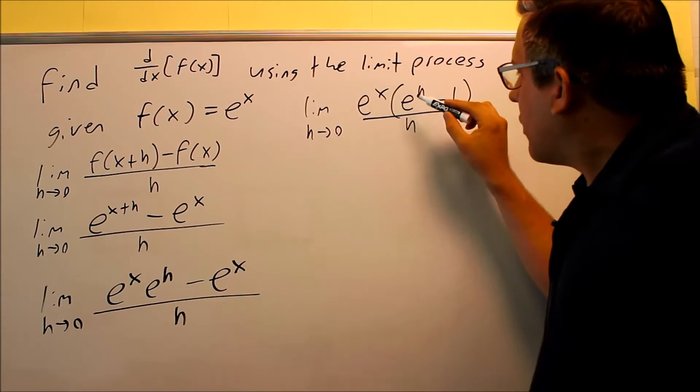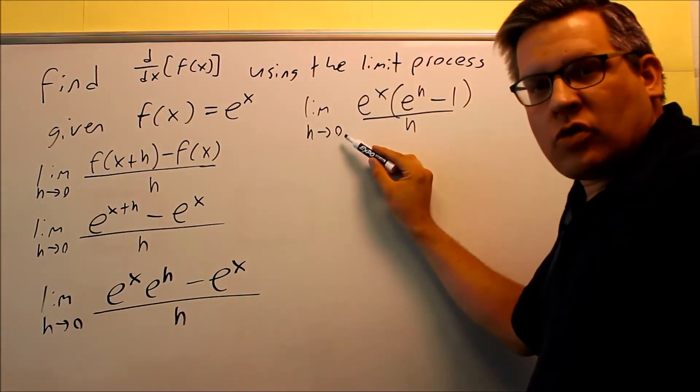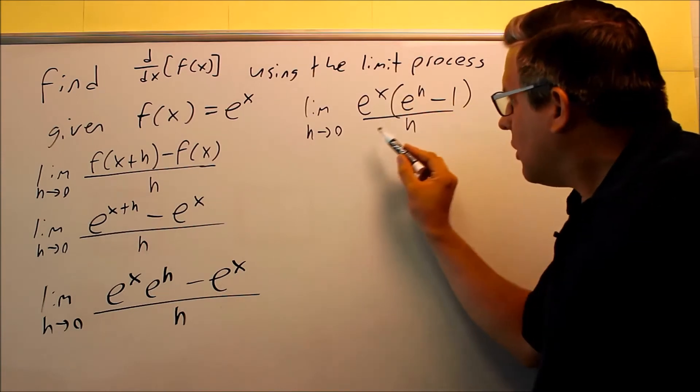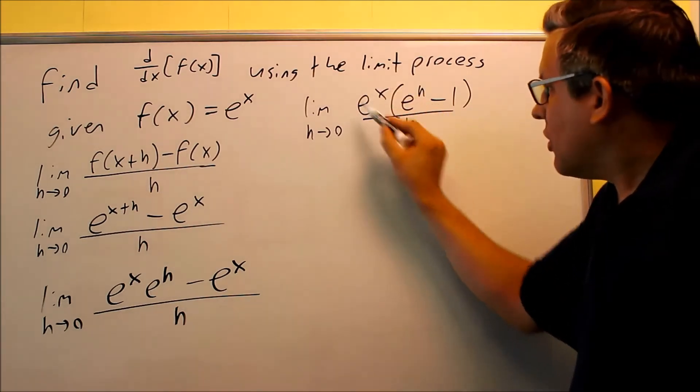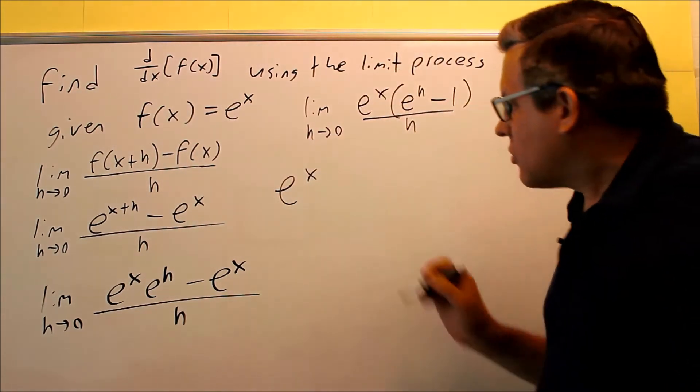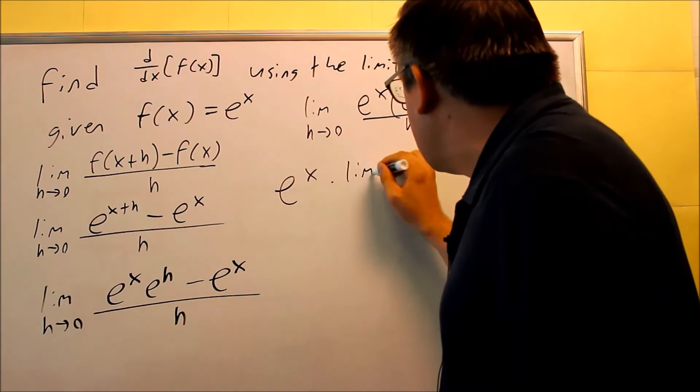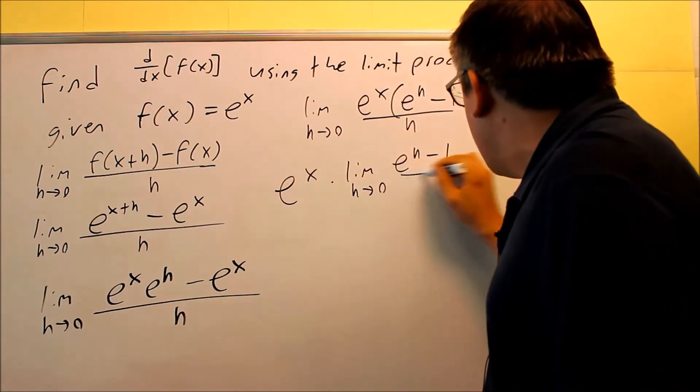Now this e to the x term, what I can do here is I can actually pull that out because as h goes to 0, that's not going to affect us at all. That's not the variable that's being used. So e to the x essentially can be brought all the way on the outside. So e to the x and then I have limit h goes to 0, e to the h minus 1 over h.